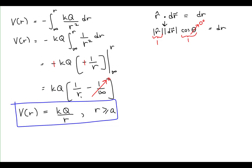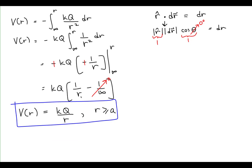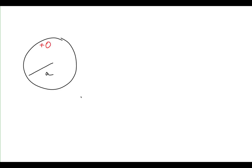Let's look at Part B. Part B says let's find the electric potential at a point R less than or equal to A — so at a point inside the sphere. If we look at this situation where we have the sphere of radius A, this is a solid conducting sphere. Since we know it's a solid conducting sphere in electrostatic equilibrium, we know that the electric field everywhere inside that sphere is equal to zero.